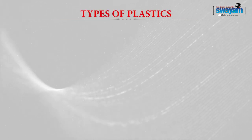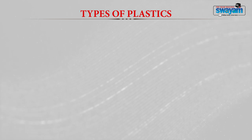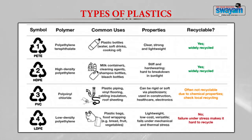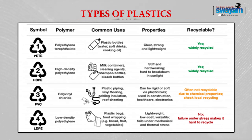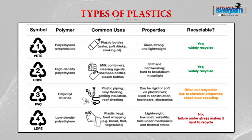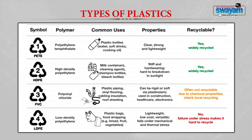The types of plastics commonly used in day-to-day life are listed in a table with symbols showing how they are designated. Polyethylene terephthalate, or PET, is designated with three arrows and the letters PETE. PET bottles are used for storing soft drinks or cooking oil. They are very clear, strong, and lightweight, and can be recycled. The second type is high density polyethylene, HDPE, used for milk containers, cleaning agents, shampoo bottles, and bleach bottles. They are very stiff, hard, difficult to break by sunlight, and can be recycled.